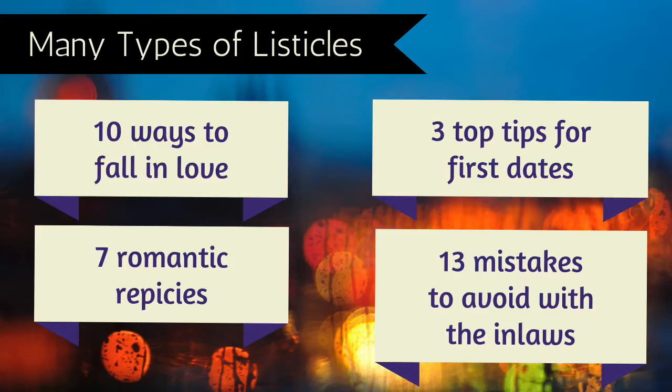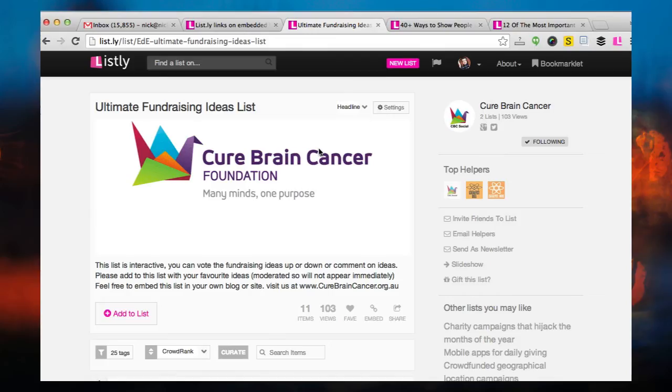People can suggest additions and vote. The third example is what people call listicles — a great way of creating original content. Tips, tricks, hacks, seven ways, seven insights, three things you didn't know — these are all great ways of communicating as a writer.